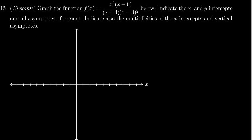In this video, we provide the solution to question number 15 for practice exam number 3 for Math 1050. We're given a rational function f(x) equals x squared times x minus 6 all over x plus 4 times x minus 3 squared. We have to graph this function, but it also asks us to list some information.